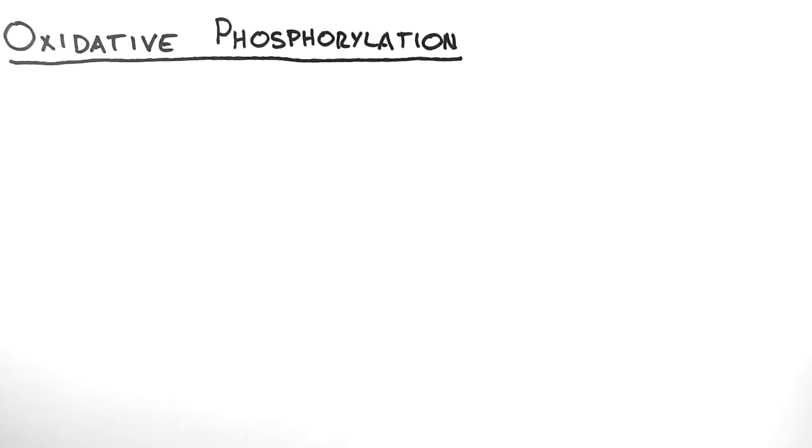Hi, this is the fifth and final video in the cellular respiration series. In this video we are going to look at oxidative phosphorylation, which is also known as the electron transport chain.